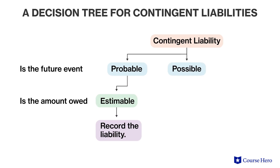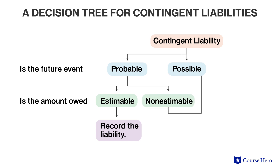A second type of contingent liability is a possible liability. A possible liability can differ from a probable liability in two ways: either the probability for the liability is less certain, or even though the probability of it becoming a liability is the same, the amount cannot be estimated. Possible liabilities are not recorded on the balance sheet; instead, they are simply disclosed and described in the notes to the financial statements.